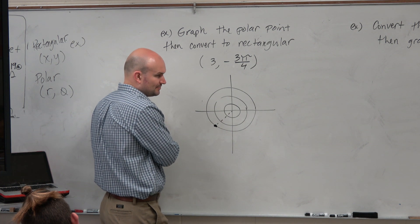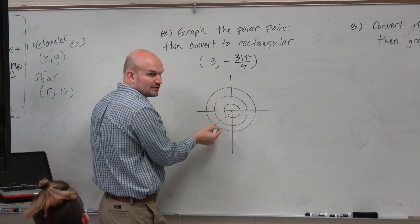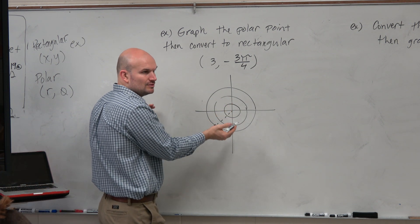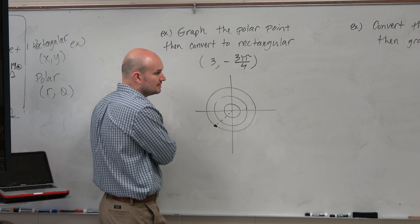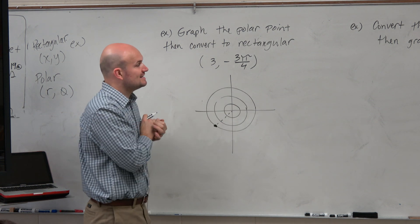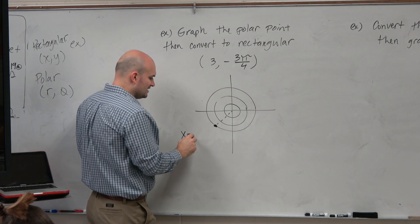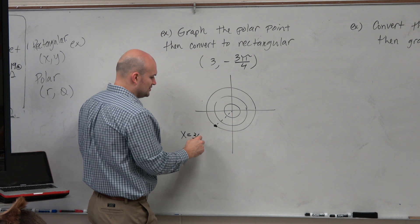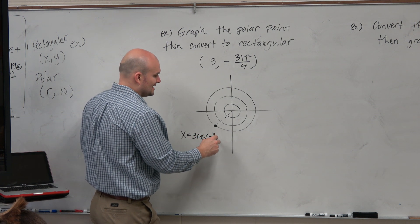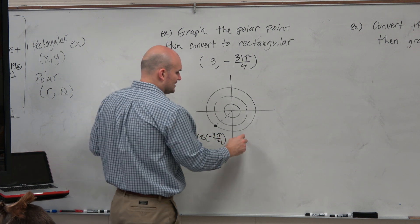So that would be your coordinate point. Again, I'm doing the dotted line. That's not part of the graph. But I'm just doing that so we understand the angle, right? So then the next thing is, can you convert that to rectangular form? Well, yes, based on the equations that we are given that we are not going to be able to use on a test or quiz, I need to know these values.